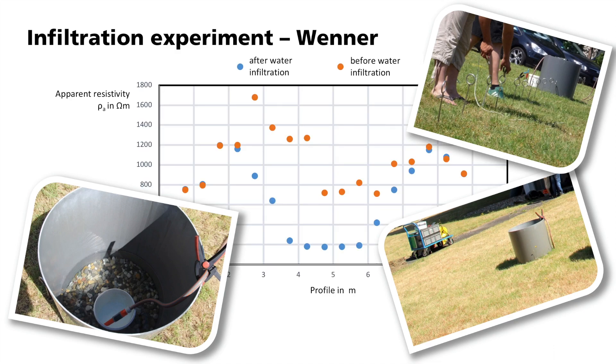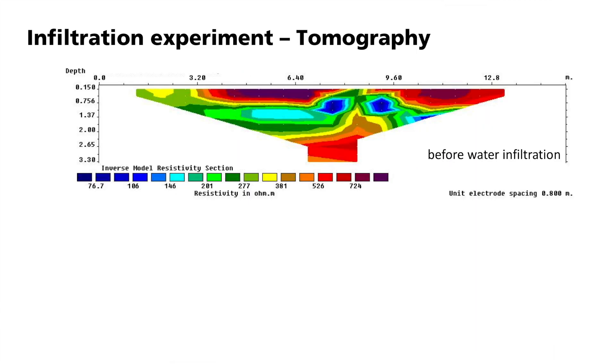Here is a plot of the apparent resistivity of two Wenner measurements. Once before the water infiltration in orange and once afterwards in blue. The comparison allows us to track the effects of the water dispersion. The measuring profile leads directly past the water tank. It is located at profile meter number 5. Here, the probe distance is 50 cm. This means that a sensitive depth range is between 15 and 25 cm. You can clearly see how the curve drops within the range of profile meters 2 to 7. Before and behind it, the level of the first measurements is retained. Obviously, water has penetrated into the subsurface and thereby reduced its resistivity.